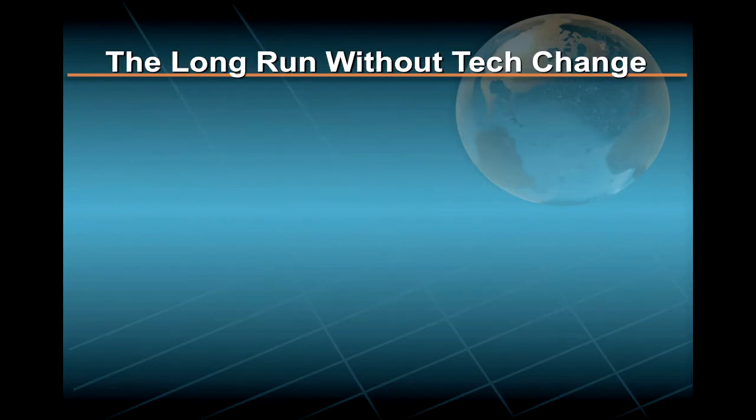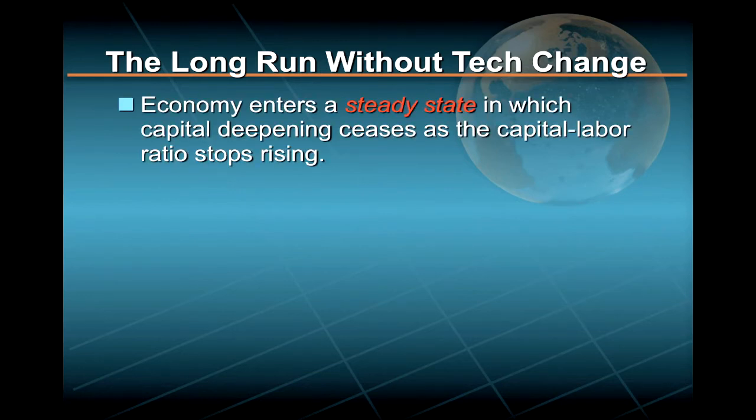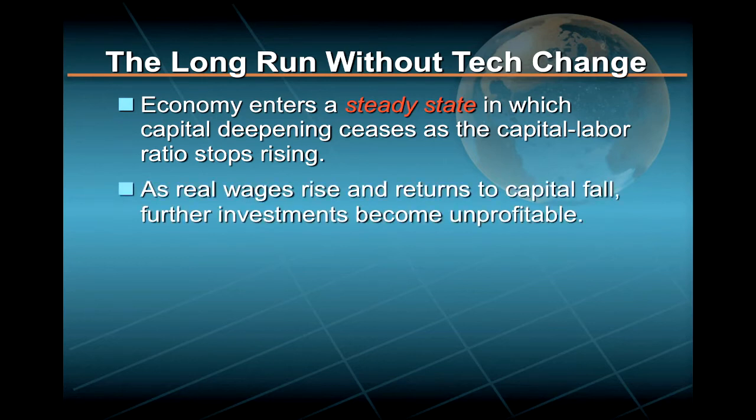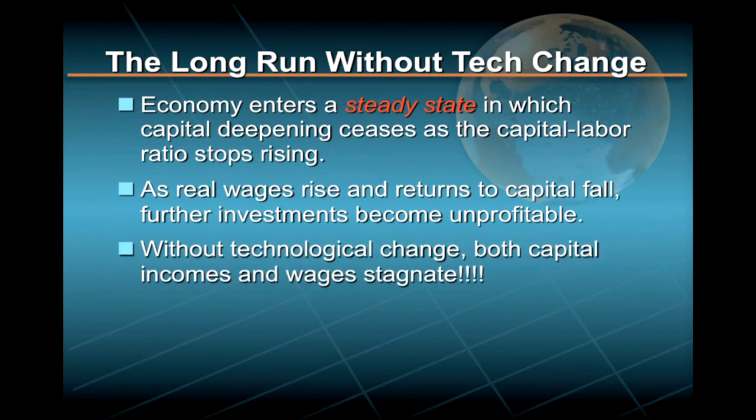What this means is that in the long run, the economy will enter a so-called steady state in which capital deepening ceases as the capital-labor ratio stops rising. This is because even as capital deepening is driving real wages up, the returns to capital are falling, so that at some point further investments in capital deepening become unprofitable. At this point, the economy enters a steady state in which, without technological change, both capital incomes and wages end up stagnating.